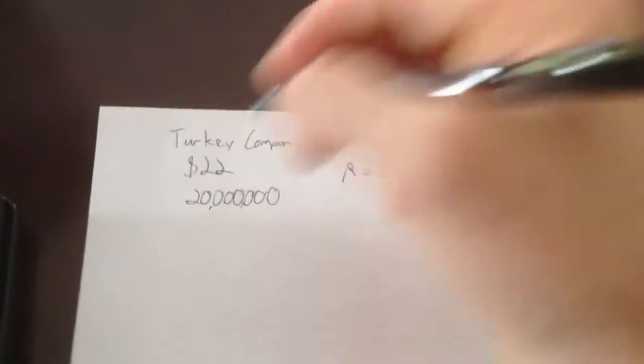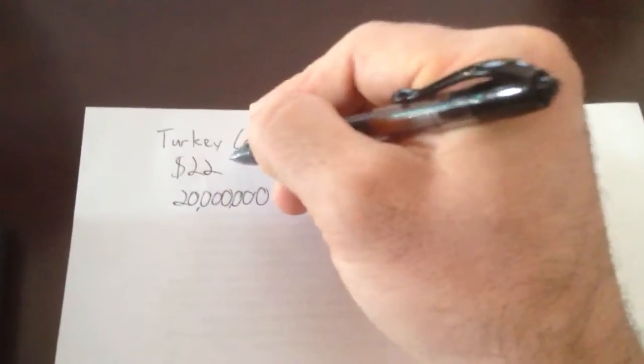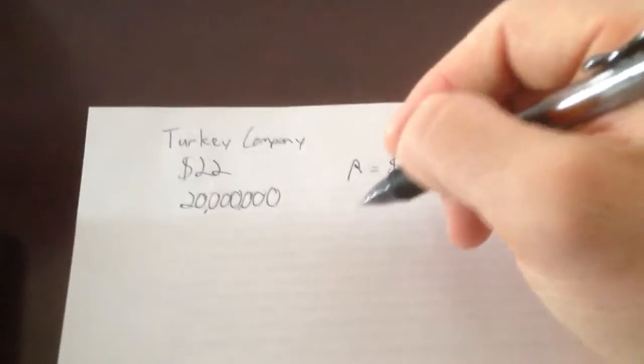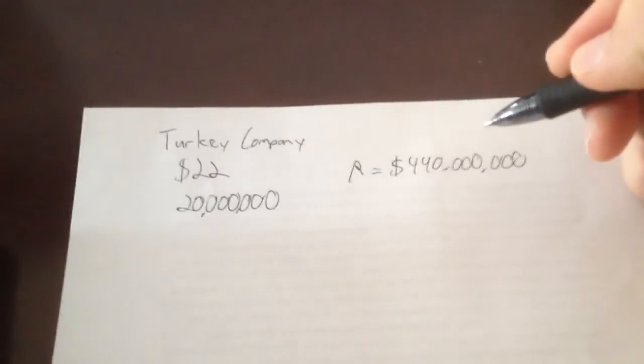So what you do as a company, you decide to test something out. You lower your price by $3. So you take this down to $19. And when you do that, you gain 5 million customers at $19.